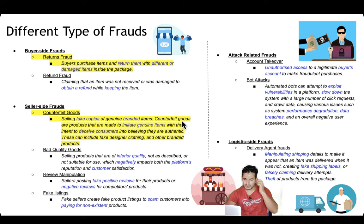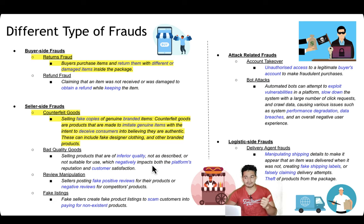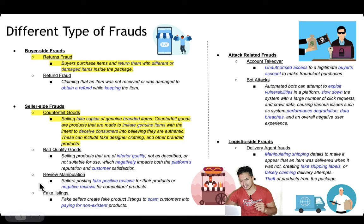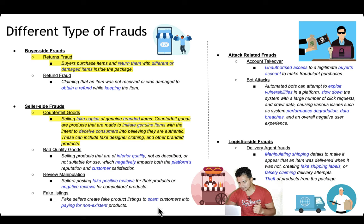There are also seller-side frauds. Counterfeit goods involve a seller selling fake copies of genuine branded items, created to deceive customers who think they're authentic — this can include fake designer clothing and blended products. Bad quality products involve selling inferior quality items not as described. Review manipulation involves posting fake positive reviews on their own products or negative reviews on competitors. Fake listings involve new sellers creating fake product listings to scam customers into paying for non-existent products.